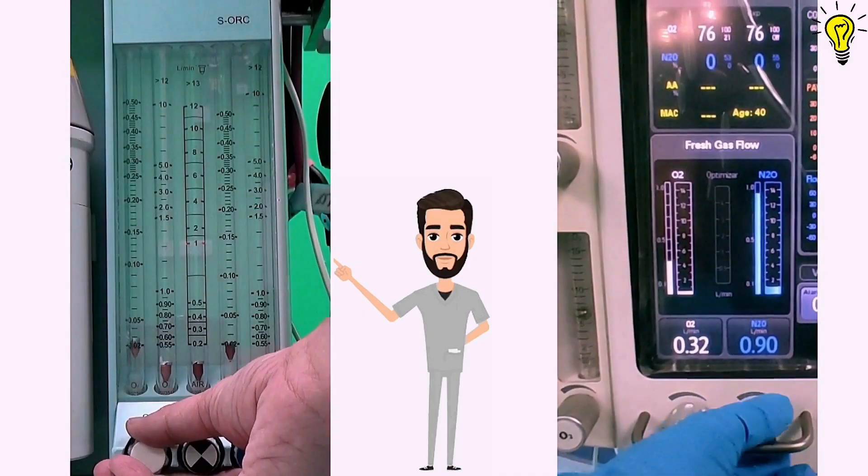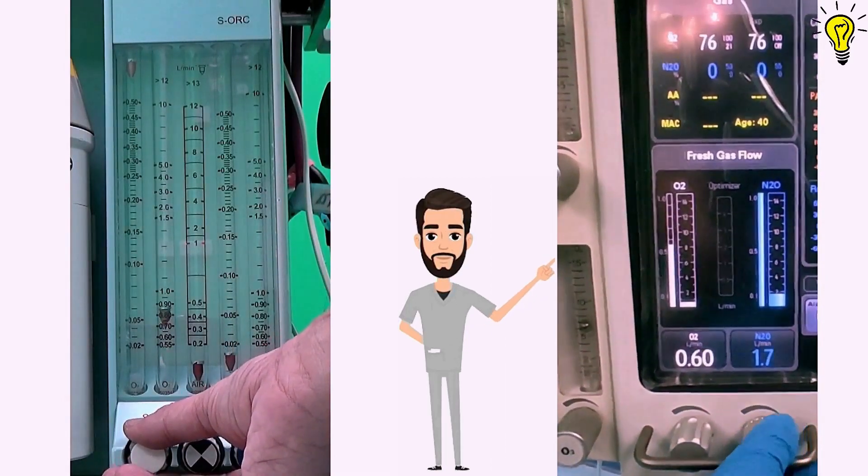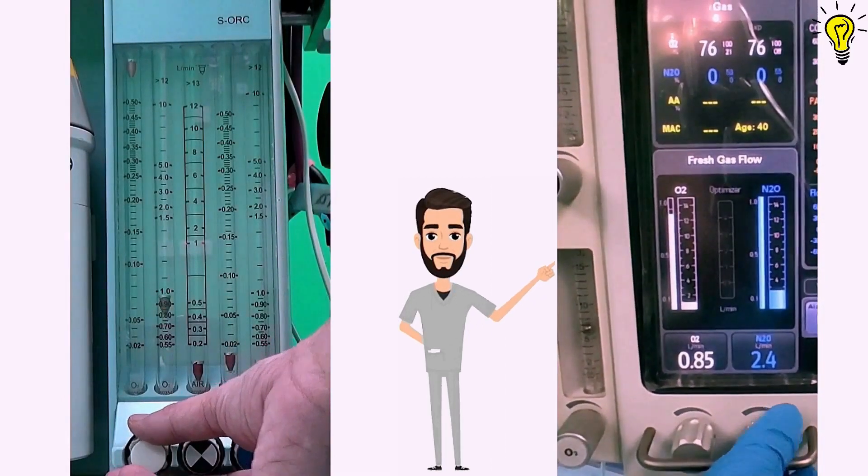On the left side you can see the mechanically pneumatically powered flow meter. On the right side is the electronic digital flow meter, more common in newer machines.